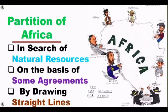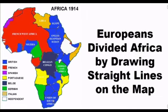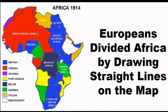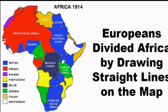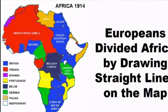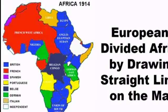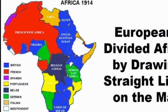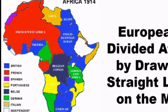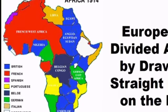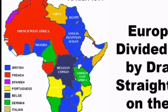The Europeans who reached Africa in search of natural resources partitioned the continent at the beginning of the 20th century. On the basis of some agreements among the European countries, they divided the African nations among themselves by just drawing straight lines on the map.